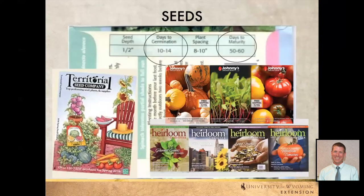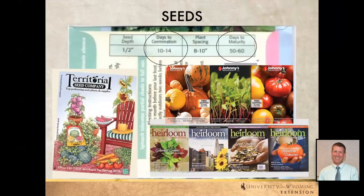As we start selecting seeds, it's important to think about days to maturity. Some seeds take a while before they germinate — carrots, for example, can take almost two weeks to germinate. Other plants might only take three or four days in the right conditions. Depending on the type of vegetable, the germination time frame can vary significantly.